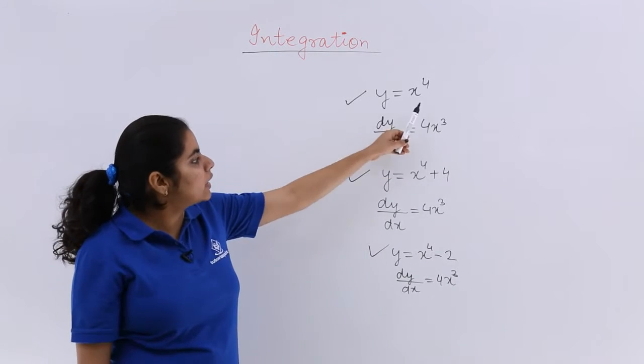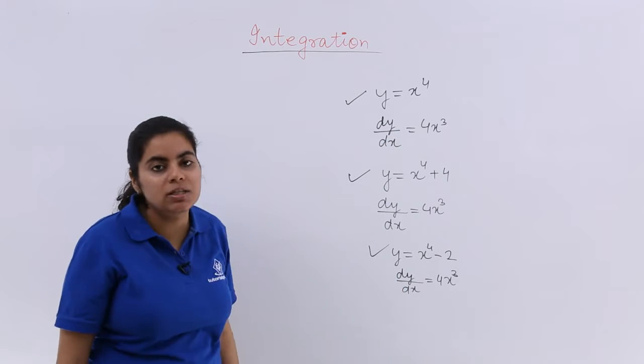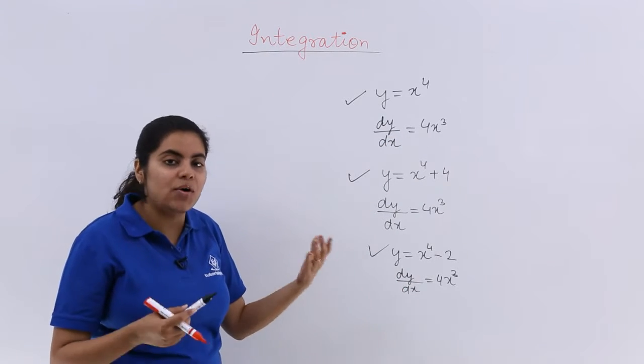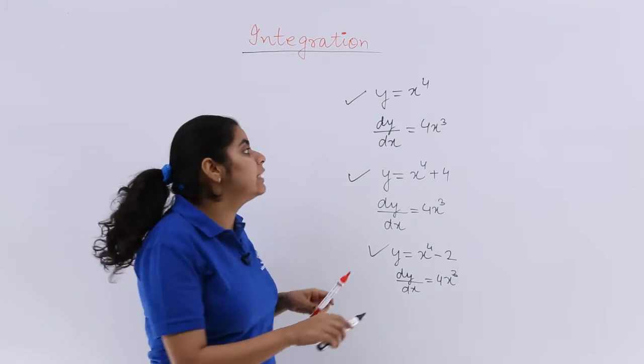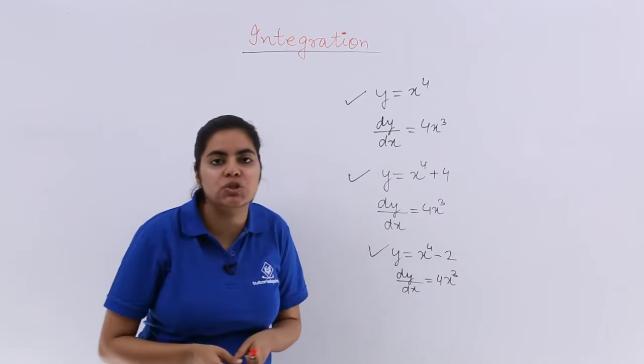So what do you observe in these examples? You see that irrespective of whatever constant I add or subtract to x raised to the power 4, I get the same result: 4x cube, 4x cube, 4x cube.